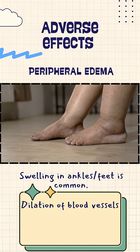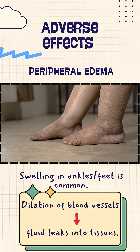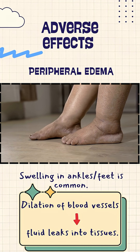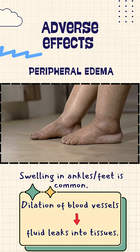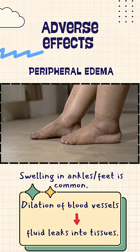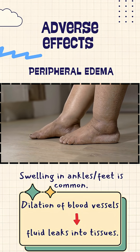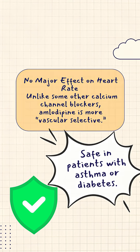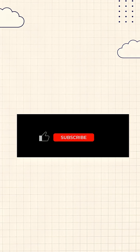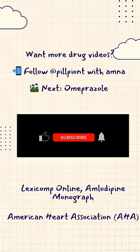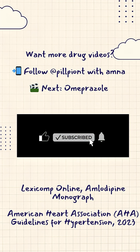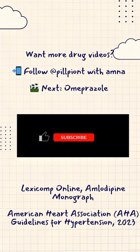One of the major adverse effects of amlodipine is peripheral edema, where swelling in the ankles or feet is very common, because dilation of blood vessels leads to more fluid leaking into the tissues. Amlodipine is a vascular selective drug — it has no major effect on heart rate, unlike some other calcium channel blockers.